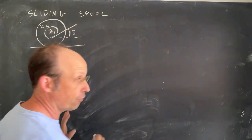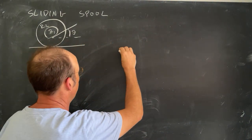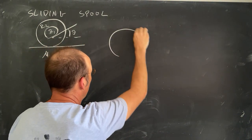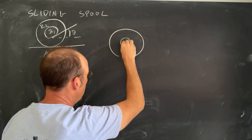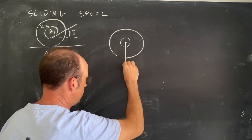So I'm going to redraw the diagram. I'm going to draw all the forces acting on the spool. So here's my spool. I have the gravitational force, mg, right there.